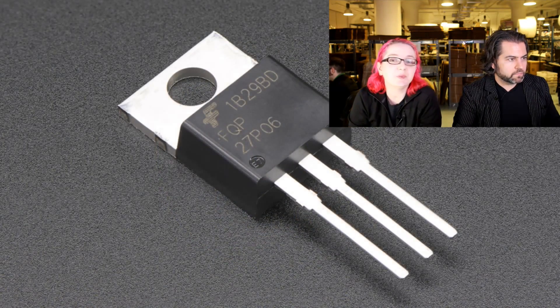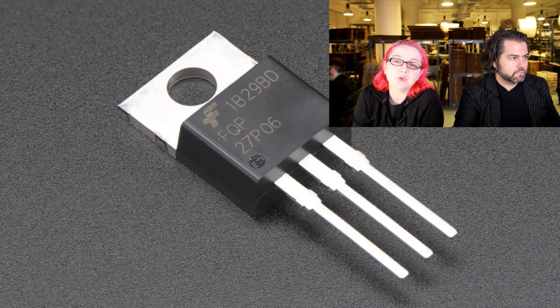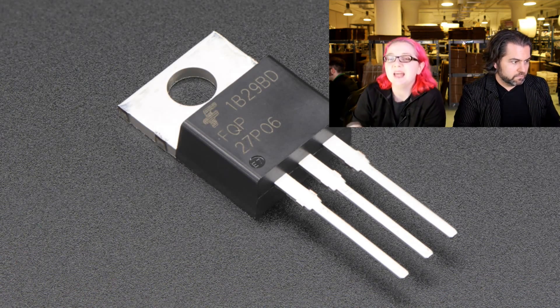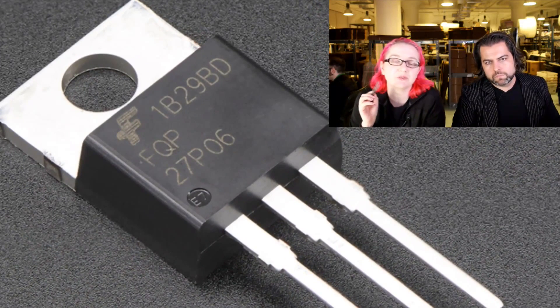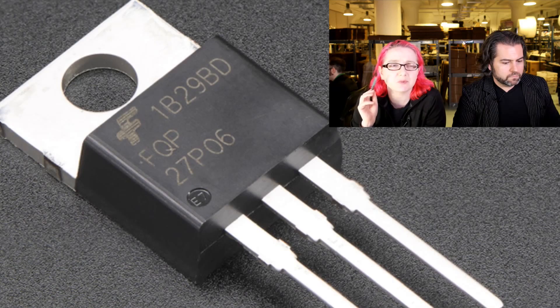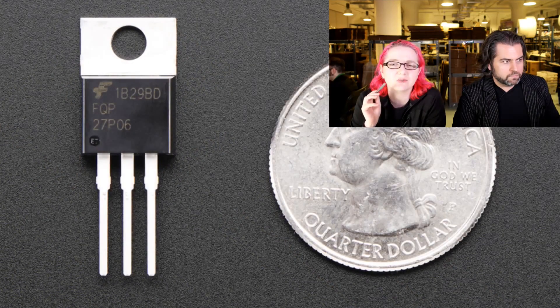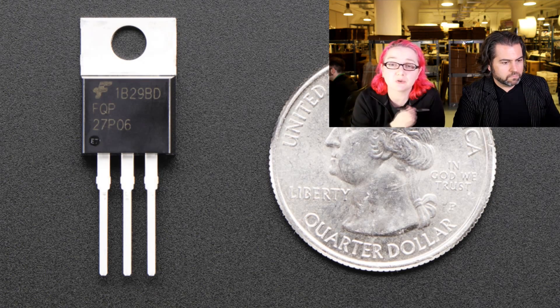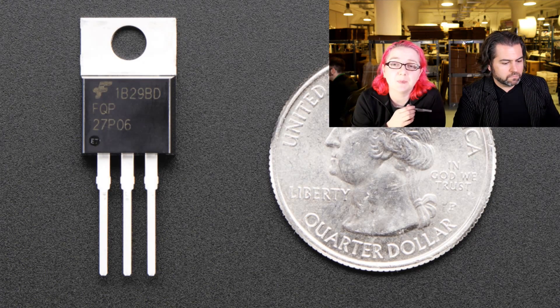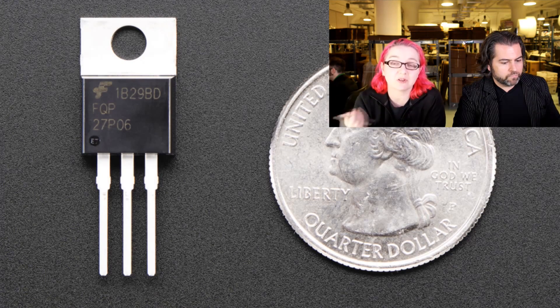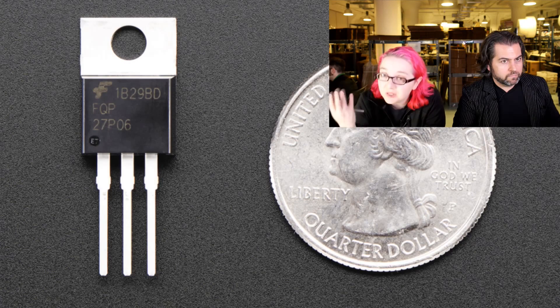What's this? Oh, this is a P channel power MOSFET. We have the N channel power MOSFET already in the store. P channel power MOSFET not used as often. P channel MOSFETs are a little tougher to use because they're minority carriers, not majority carriers. It's harder to pass a lot of electrons through it.